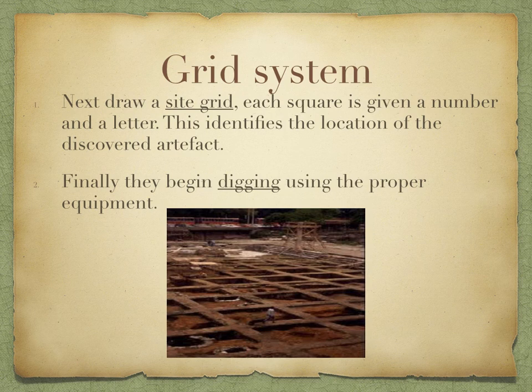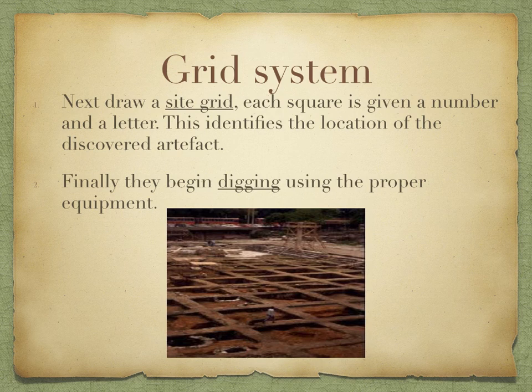The next thing is to draw a site grid. On a site grid, each square is given a number and a letter, which identifies the location of any discovered artifact. Generally, each square is a five-meter square, giving a surface area of 25 square meters. Once the site grid has been set up, they will finally begin digging using the proper equipment.